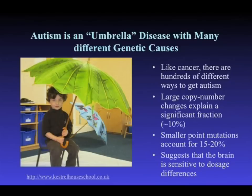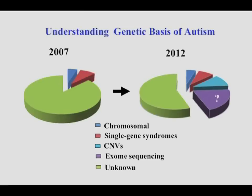All the data points to the brain — particularly during development — being highly sensitive to dosage imbalances. In 2007, only a small portion of the pie of autism could be explained genetically, largely by large chromosomal events seen under a scope plus single gene syndromes like fragile X and Rett syndrome. We are at a precipice right now. I'm confident in saying 10% by large CNVs; small CNVs will contribute easily another 10%; and preliminary data suggests 15–20% of autism may be caused by disruptive de novo or very young mutations. It's not unreasonable to assume we will have 60% of the heritable component of autism explained within the next couple of years.